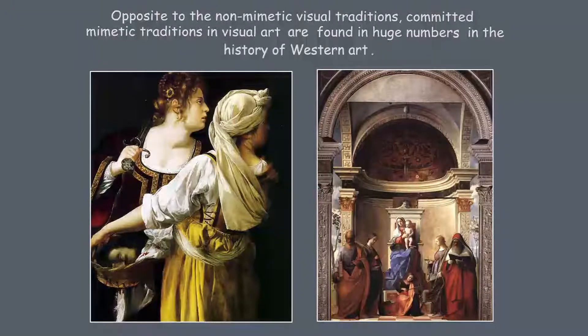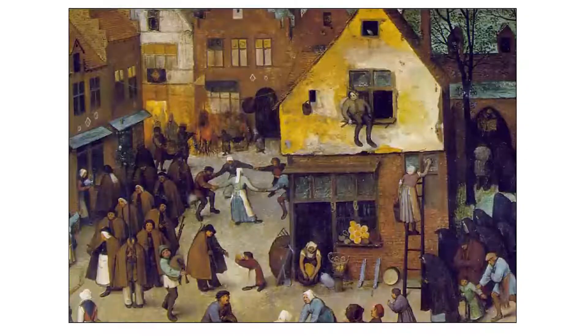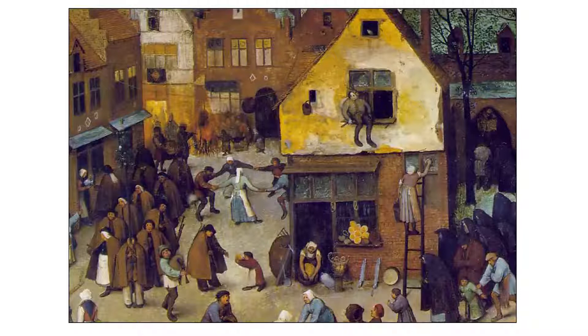As opposed to non-mimetic visual traditions, mimetic traditions are usually committed to very strong reference and very convincing rendering of visual forms, and they are found in great numbers in western art history. To understand these paintings you need knowledge of the visual world — how space exists in the real world and how the painter makes it exist in the pictorial world. In the mimetic tradition you find certain principles of realistic art being employed, such as perspective, and the laws of gradually receding space and scale.